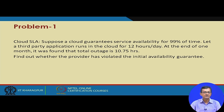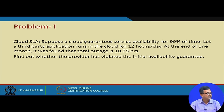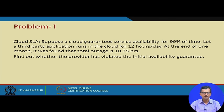Let us look at a simple problem. Suppose a cloud provider guarantees service availability of 99% uptime. A third-party application runs in the cloud for 12 hours a day. At the end of one month, it is found that there is an outage of 10.75 hours. We need to find out whether the provider has violated the initial availability guarantee.